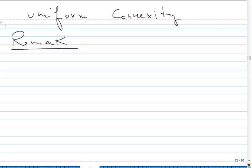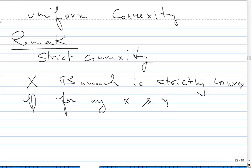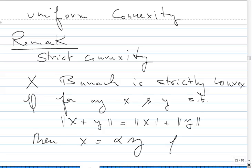This is about strict convexity and the connection with uniform convexity. As I claimed last time, uniform convexity implies strict convexity. But let's go back to the definition. We say that a Banach space X is strictly convex if and only if for any vectors X and Y such that the norm of X plus Y equals the norm of X plus the norm of Y, then they are proportional for alpha positive.